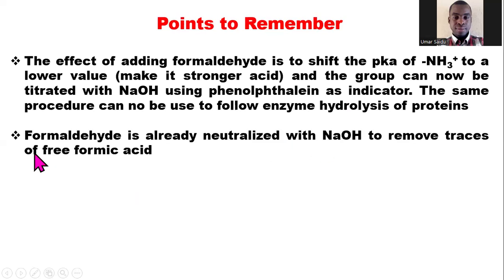The formaldehyde we use is already neutralized with sodium hydroxide. The reason sodium hydroxide is added to the formaldehyde is to remove traces of free formic acid. When we add formaldehyde to the amino acid solution, the pKa of the amino group is shifted to a lower value, allowing the group to be titrated with sodium hydroxide using phenolphthalein as indicator.